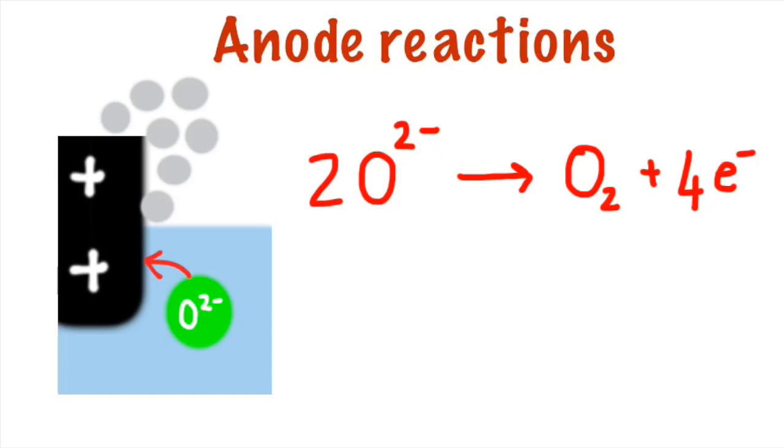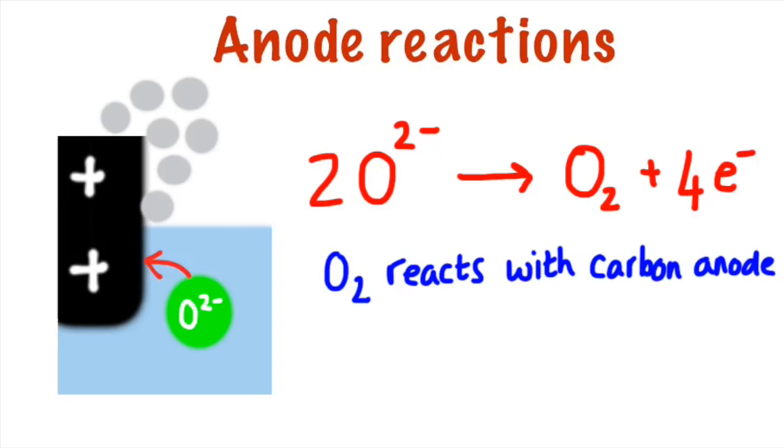You can see the oxygen bubbles bubbling off there at the anode and that oxygen that's produced is produced very close to a hot carbon anode. And so there's an immediate reaction between the oxygen and the carbon and that produces carbon dioxide which is then released from the cell.